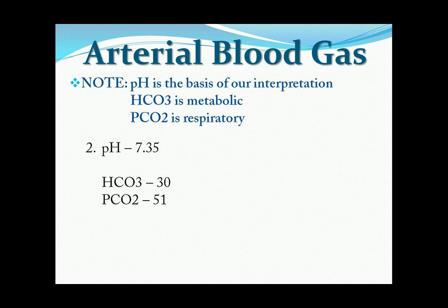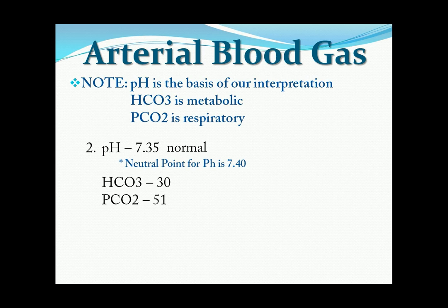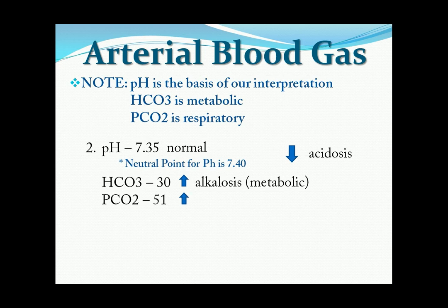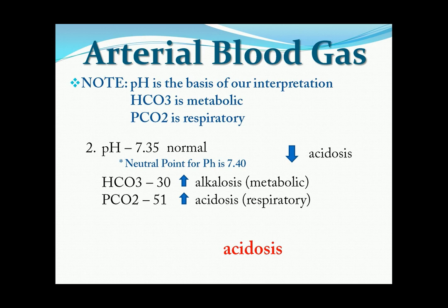Example number 2: pH is 7.35, HCO3 is 30, PCO2 is 51. The pH is within the normal range. So for us to identify if it's acidosis or alkalosis, we will use our neutral point, which is 7.40. We will consider the pH as acidosis because it is lower than 7.40. Take note that we will only use this if it is within the normal range. First step is to identify the pH — it is acidosis. Next step is to find which one is the same with the pH, and for this example it is the PCO2, which is considered respiratory. So the answer is respiratory acidosis.